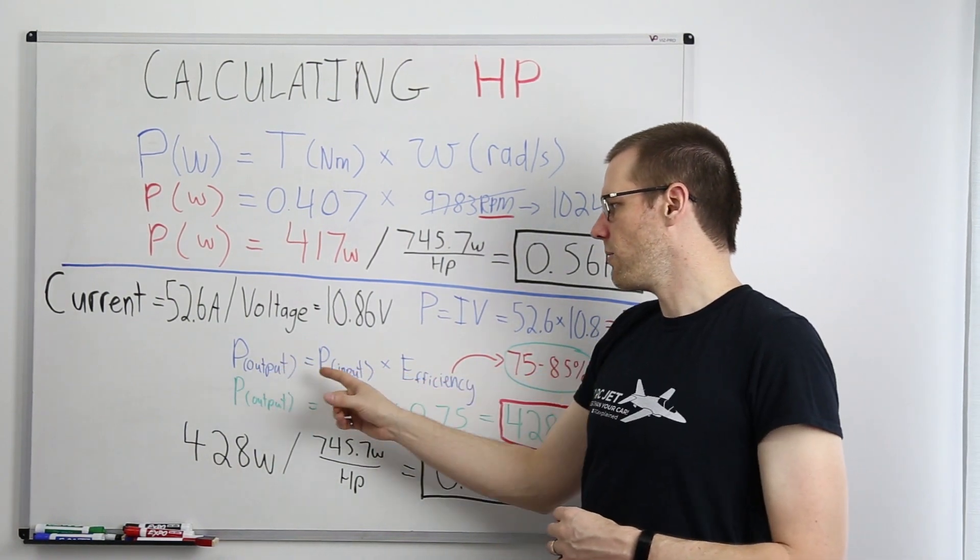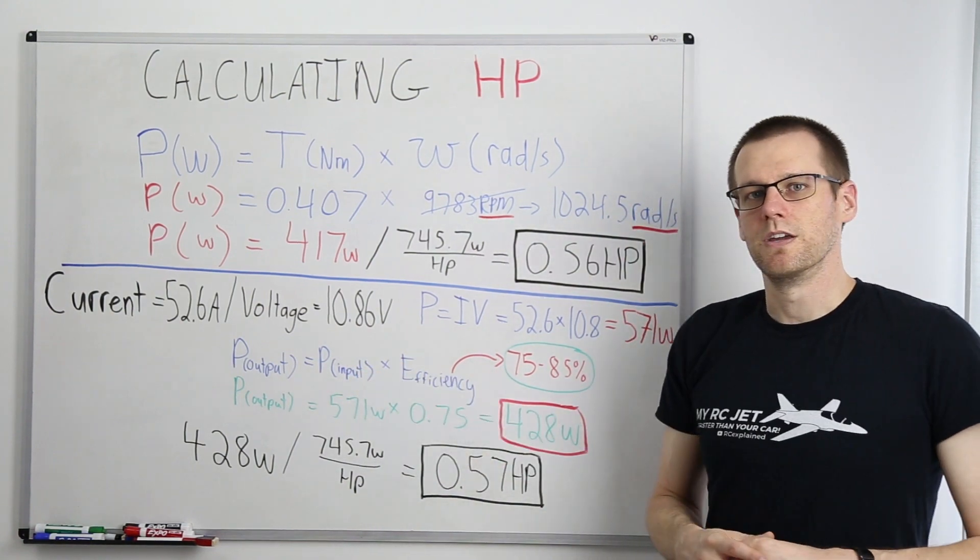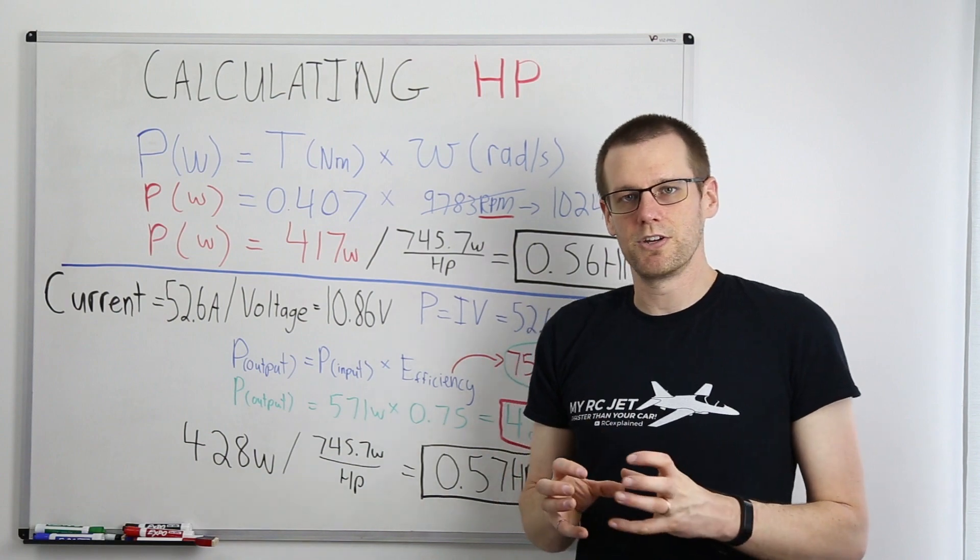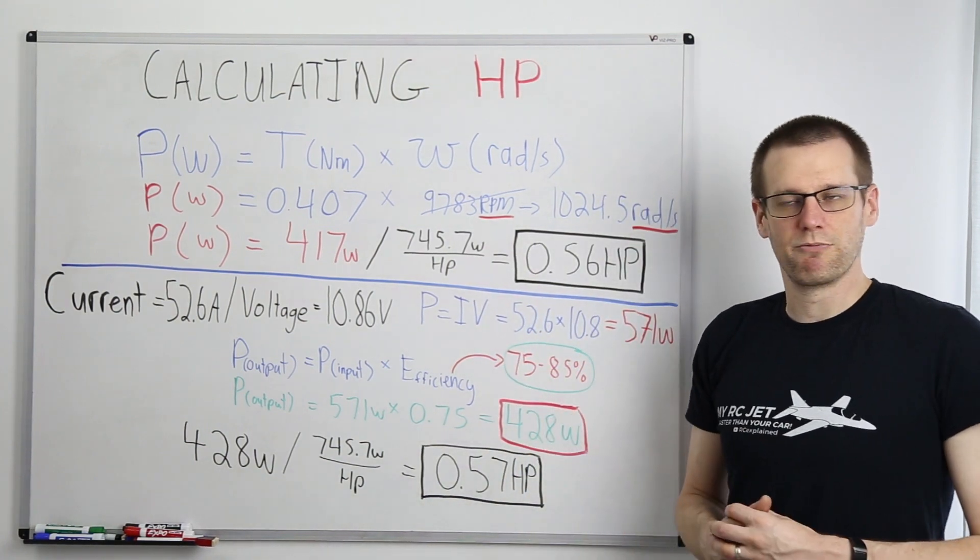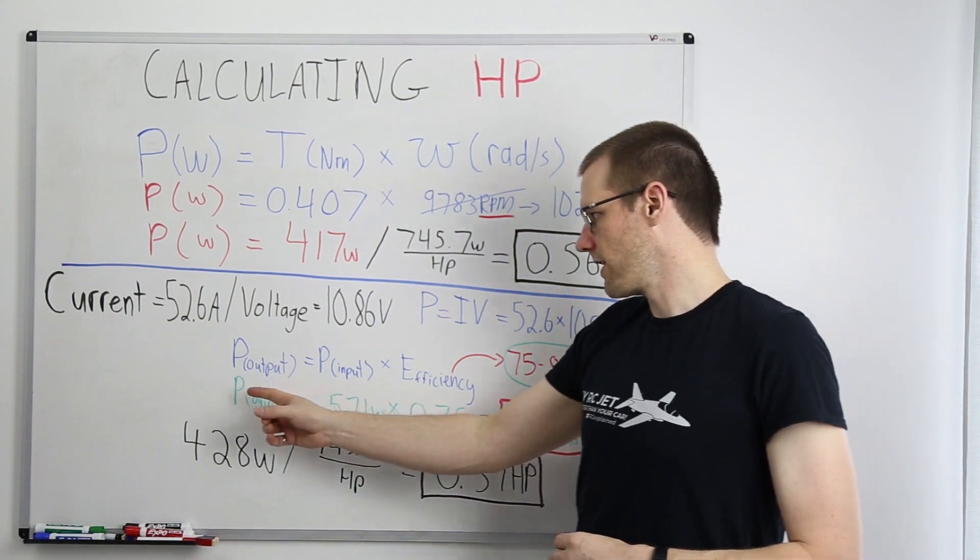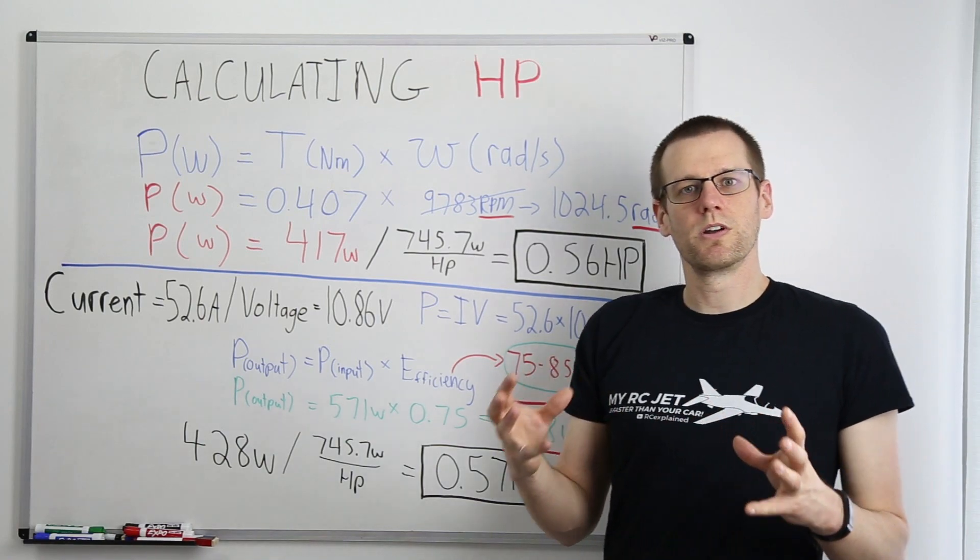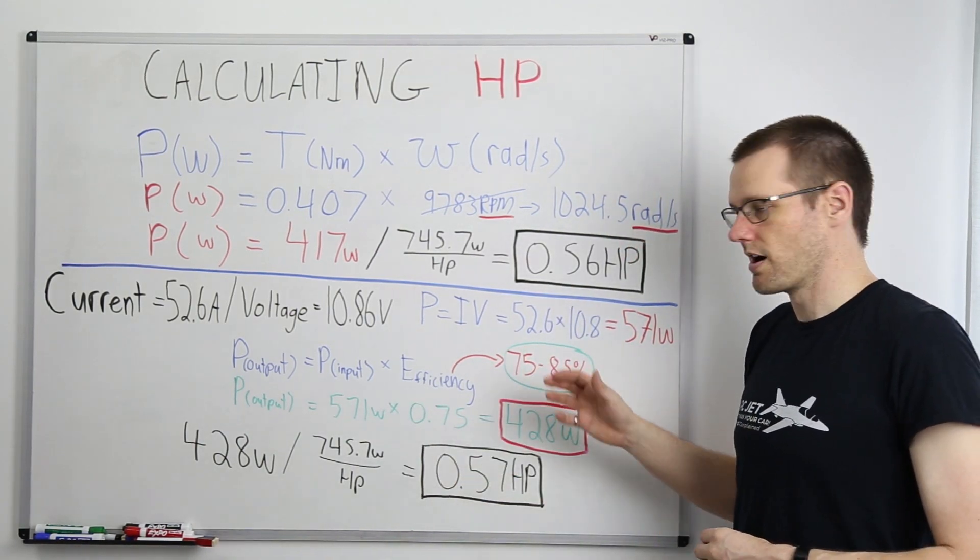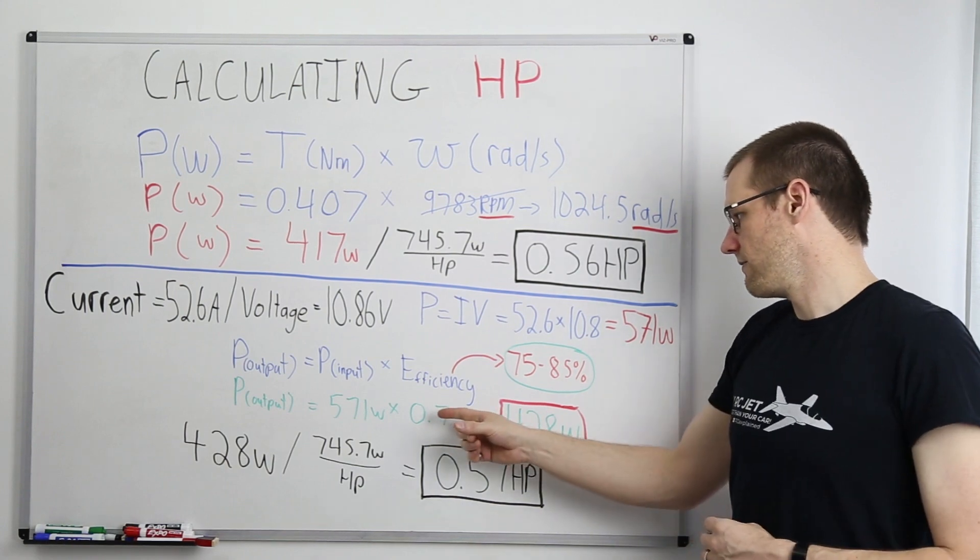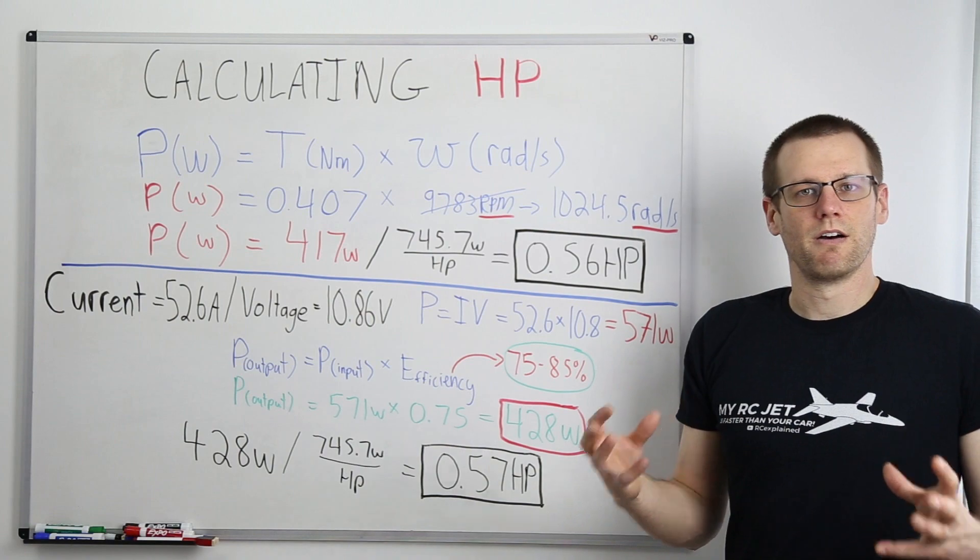So power output is equal to the power input multiplied by our efficiency. We can take a system efficiency in a ballpark range of 75 to 85%. In this case, we look at our power output, which is equal to the 571 that we just calculated. We're going to select the 75% efficiency within our range, and we get a calculation resulting in 428 Watts of power.